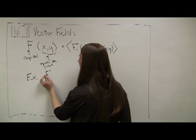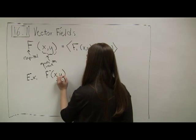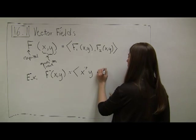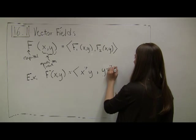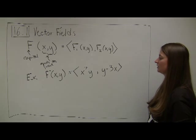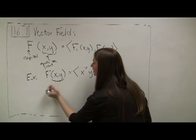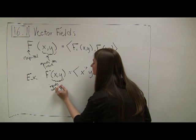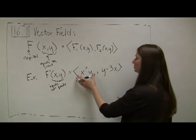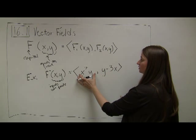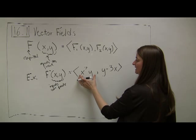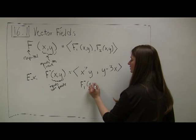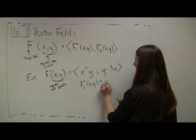For example, let's say that I have this vector field function. F of xy is equal to x squared y comma y minus 3x. What's going on in this function? Inputs in this case are points. And our outputs, the x-component function, which we usually call f1, is given by x squared y. So f1, which is a function of x and y, is equal to x squared y. And this is called our first component function.